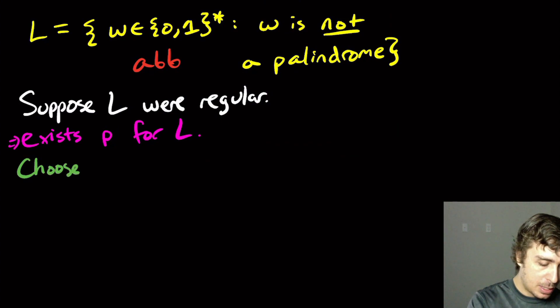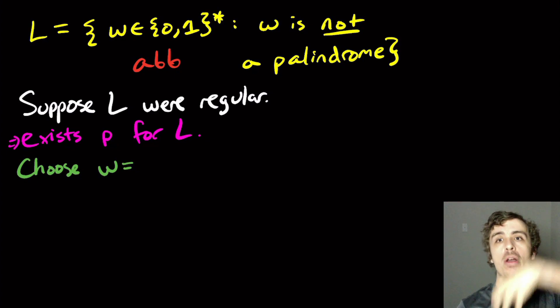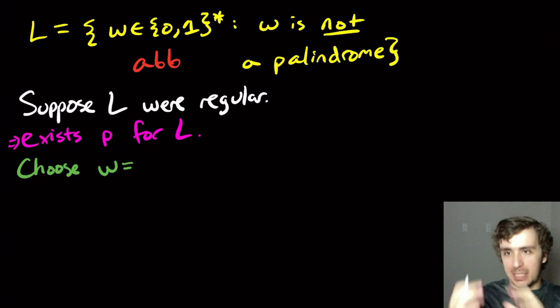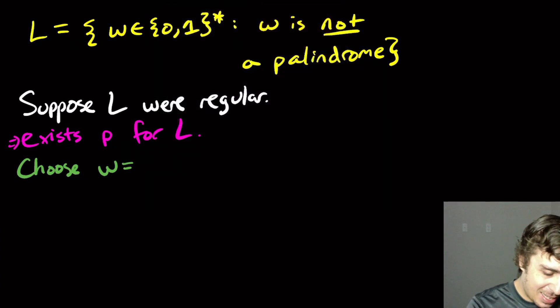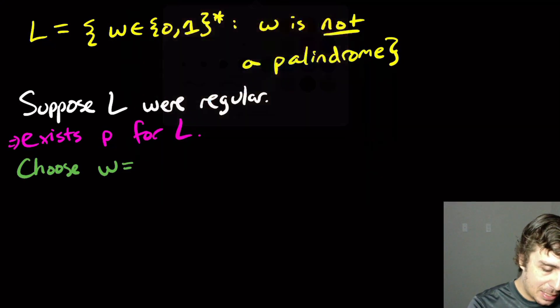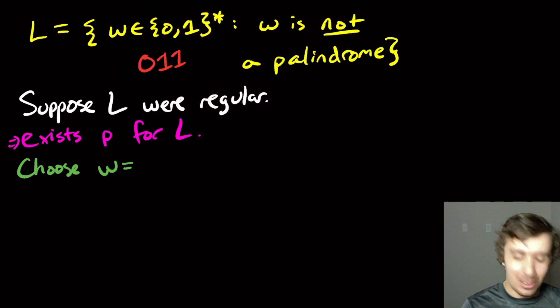So then now we've got to pick a string that is in the language and length at least P. So let's choose W equal to, well, we've got to pick something that's not a palindrome, and we want to arrive at something that is a palindrome, which is kind of hard because the things that you're going to be pumping can have a lot of different lengths. You want to make sure that you can always eventually arrive at a palindrome, which is kind of hard if you think about it. So what we're going to do here is this. Oh, actually, I should say ABB is not in there. I meant 011. That's in there.